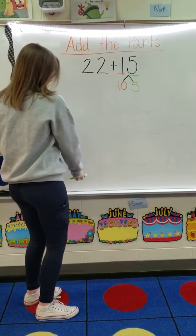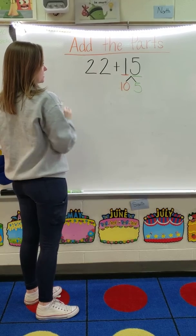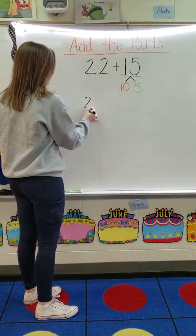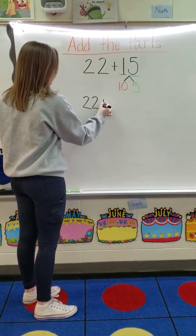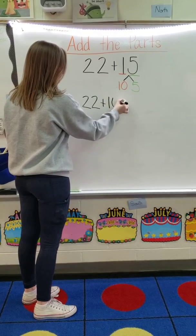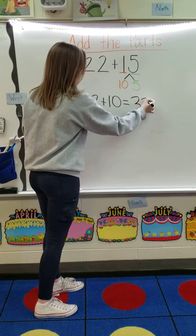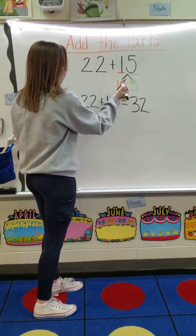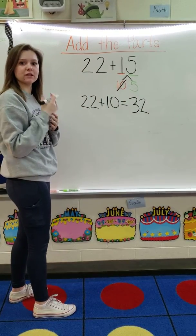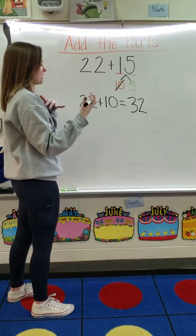My next step is I'm going to take my tens and add it to my first number. So I have 22 plus 10, which equals 32. I like to cross off what I've already used, just to remember that number's already been used so I don't get mixed up.